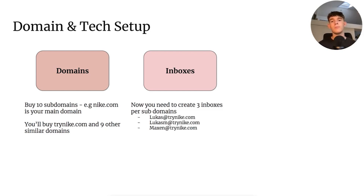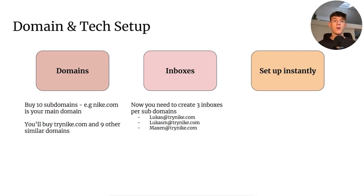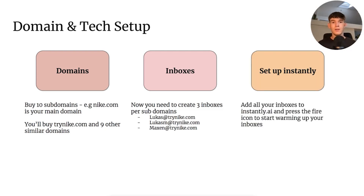You'll buy three inboxes per subdomain. So when you have trinike.com, you'll make lucas@trinike.com and lucasm@trinike.com, etc. — three inboxes, giving you a total of 30 inboxes. Now you have to set all that up in Instantly. Add all your inboxes to Instantly and then press the fire icon to start warming up your inbox. You need to warm up your inboxes because they're new — give them two weeks so you're not landing in spam and your emails are actually getting delivered.